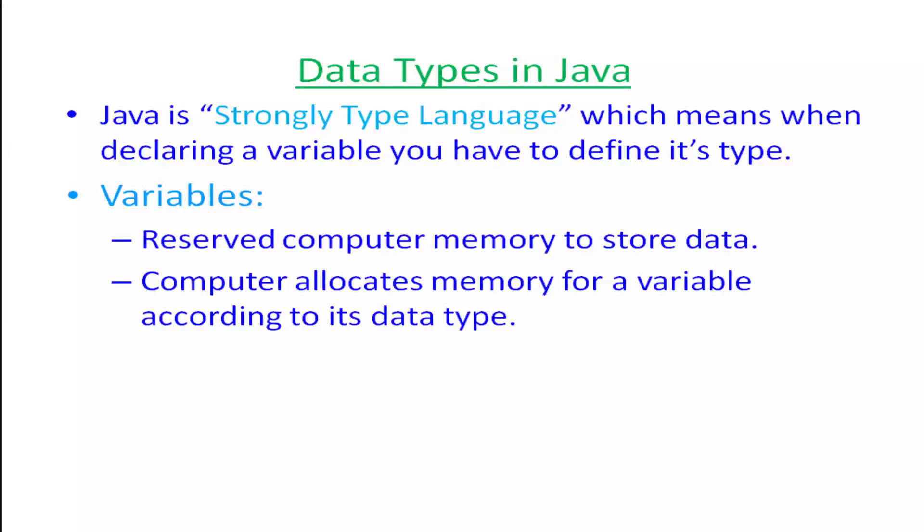What are variables? Variables are reserved computer memory locations used to store data. The computer allocates memory for a variable according to its data type, so variables are names of memory locations and their size depends on their data type.